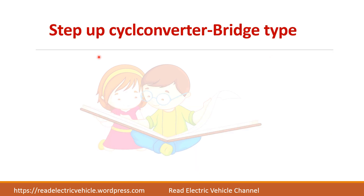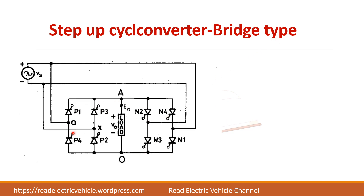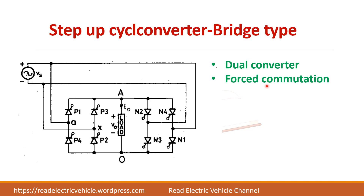Next we will see the bridge type cycloconverter. The operation is the same except that more thyristors are required. This circuit uses a bridge configuration with a positive group of thyristors and a negative group of thyristors. You may recognize this circuit — it is similar to that of a dual converter — and forced commutation is performed here as well.